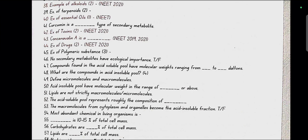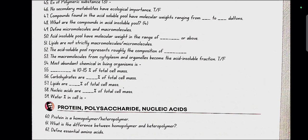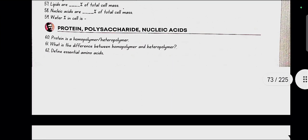Lipids are not strictly macromolecules. The acid soluble pool represents roughly the composition of cytoplasm. Most abundant chemical in living organisms is water. Proteins are 10 to 15% of the total cell mass. Carbohydrates are 3%. Lipids are 2%. Nucleic acids are 5 to 7%. Water is 70 to 90%. Protein is a heteropolymer. Homopolymers have same monomers but heteropolymers have different types of monomers.